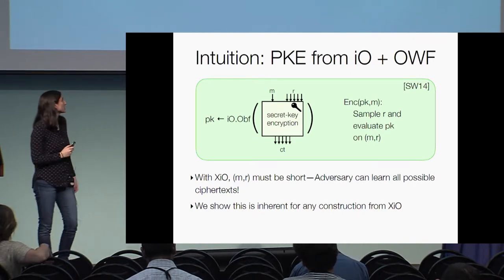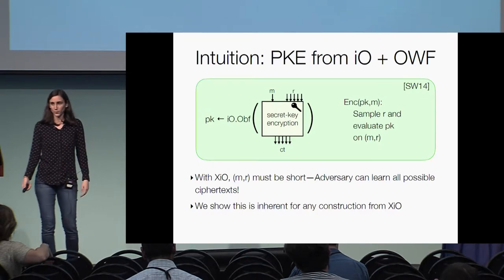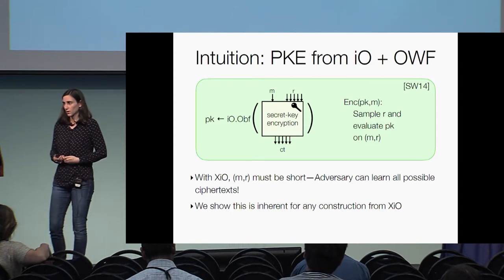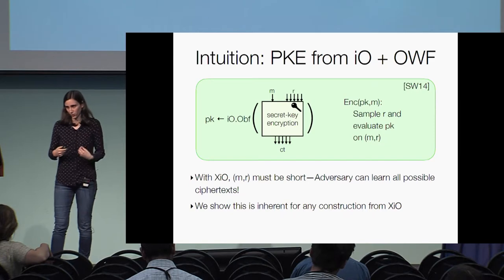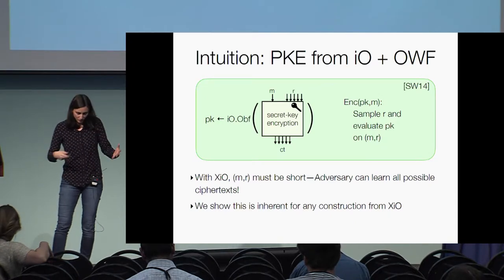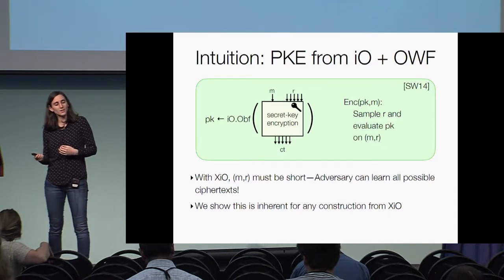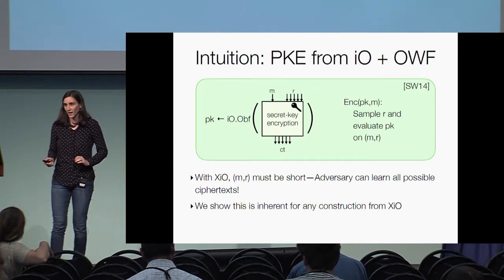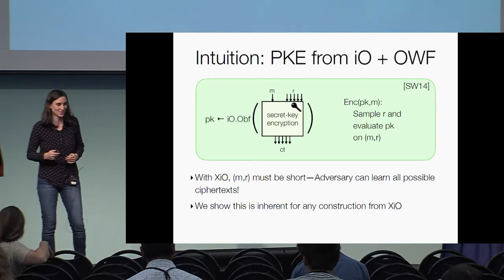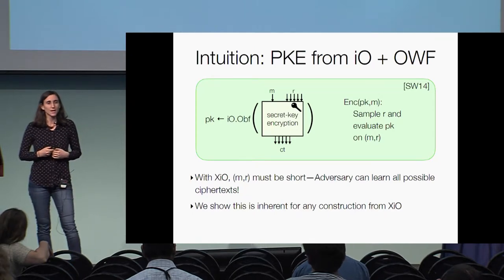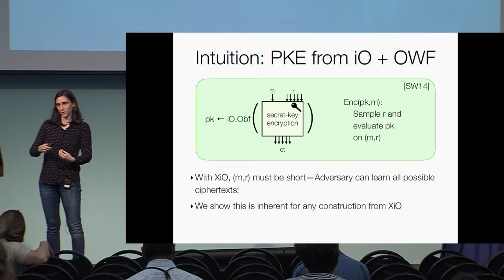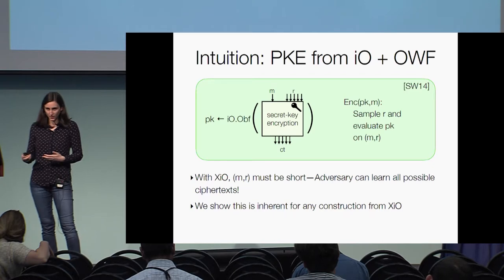This is only one construction, but we show this is inherent for any construction which starts with XIO. One thing to add is that this intuition is a little oversimplified. This intuition does carry through throughout our proof — our adversary for public key encryption learns the whole truth table for every obfuscated circuit. But on the other hand, this intuition also holds for SXIO, and SXIO does imply public key encryption, so we can't be ruling out a known construction. The reason the intuition is incomplete is that while we use the fact that the adversary can learn all the ciphertexts, we also need the obfuscator to know the truth table, which only holds in XIO and doesn't hold in SXIO.